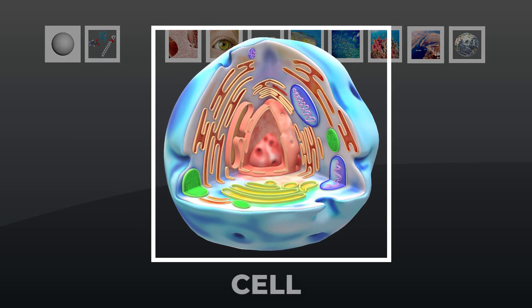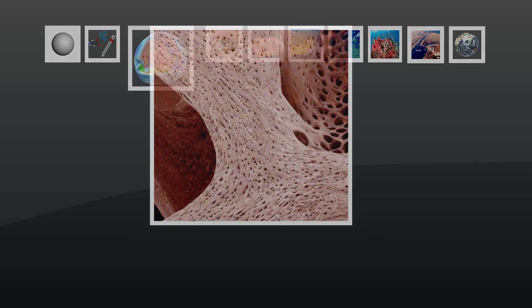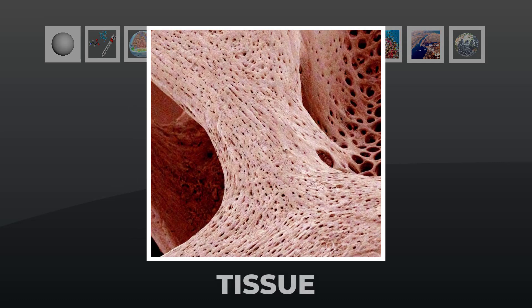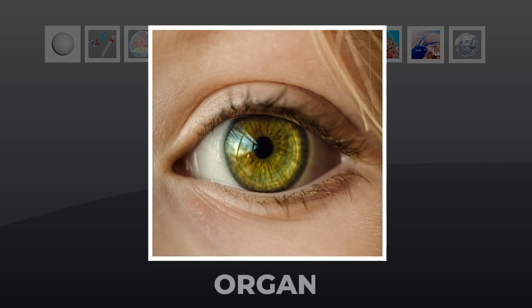A cell is the smallest unit that can live and reproduce on its own, or as part of a multi-celled organism. A tissue, such as bone, consists of certain types and proportions of cells interacting in some task. An organ consists of two or more tissues interacting in some task. The eye is a sensory organ used in vision.